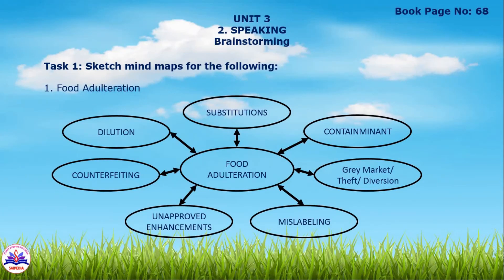Next, the Speaking topic – Brainstorming and Mind Mapping. Brainstorming method is the main method, along with Mind Mapping method. You start Task 1 on page 68 with the topic of Food Adulteration. This is a mind map exercise.